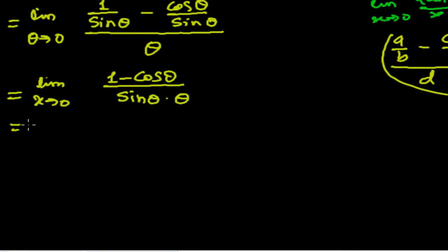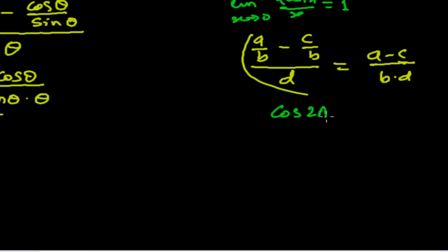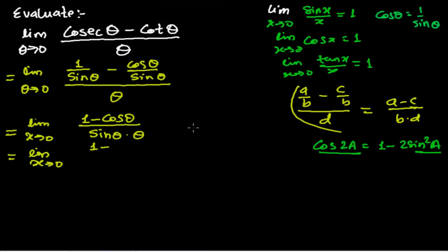Now, limit as x tends to 0 of (1 - cos(θ)) — there's no direct standard formula in this form, since cos(x) = 1 or we need to convert it. So I'm converting using the half-angle formula. The half-angle formula is: cos(2a) = 1 - 2sin²(a). So here we have cos(θ), meaning it will be 1 - 2sin²(θ/2).